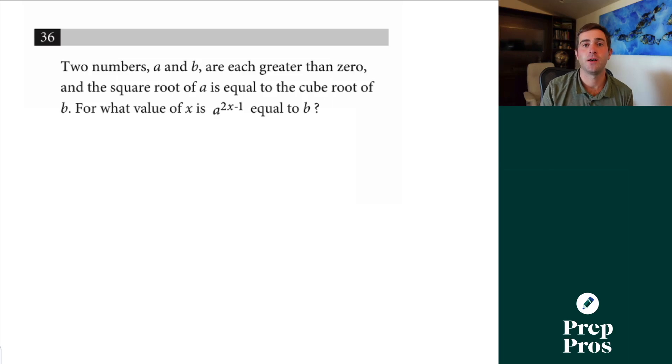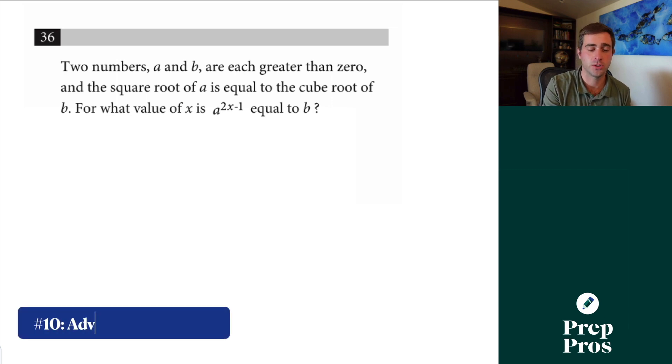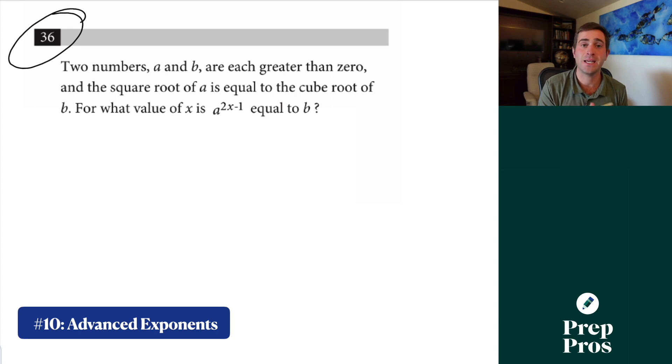All right now last up has been the killer question on the December 2022 test. It was on October 2022 so it's definitely something you should be prepped for. This is your advanced exponent questions and all these questions revolve around two important exponent rules, bases and fractional exponents. So here we see two numbers a and b are each greater than zero. This question is from the April 2021 SAT and the square root of a is equal to the cube root of b. So I can write that as a to the one-half, that's the same as the square root of a, is equal to b to the one-third.